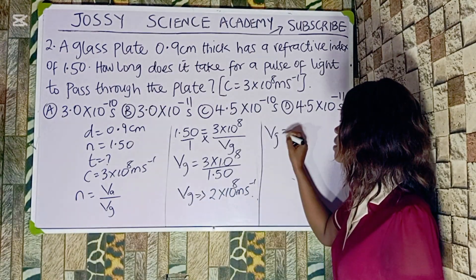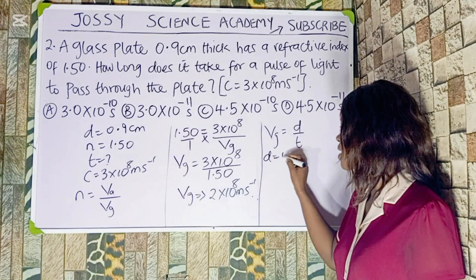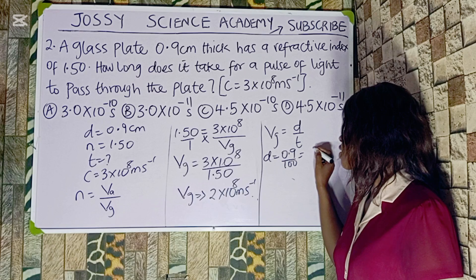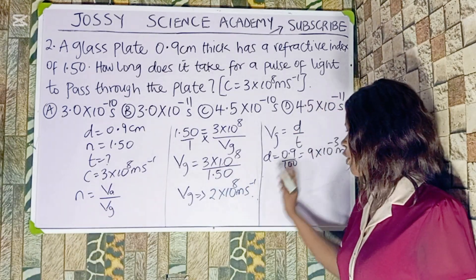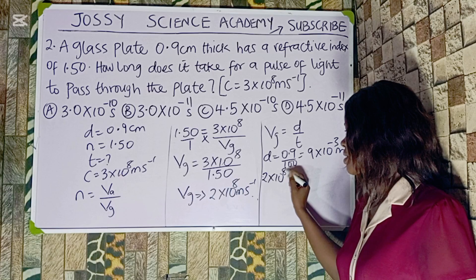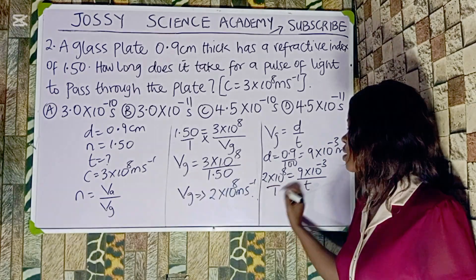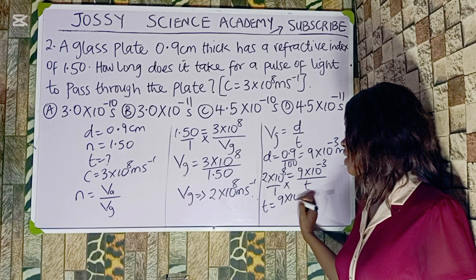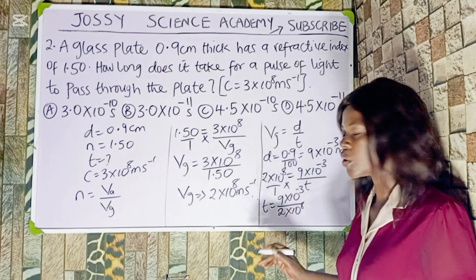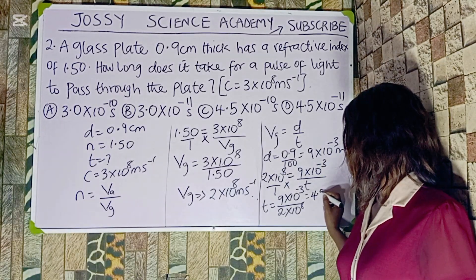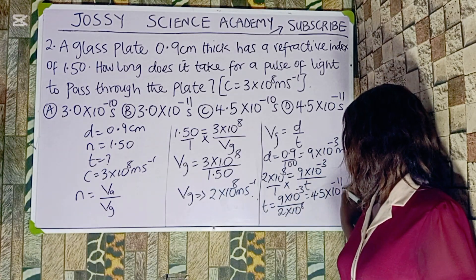Now we use velocity equals distance over time. My distance must be in meters, so I convert 0.9 cm by dividing by 100, giving 9×10⁻³ meters. Substituting: 2×10⁸ = 9×10⁻³ divided by time. Cross-multiplying, t = 9×10⁻³ divided by 2×10⁸. Dividing gives 4.5, and combining the powers: 10⁻³ over 10⁸ becomes 10⁻¹¹ seconds.